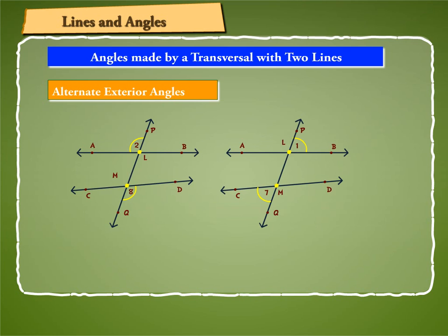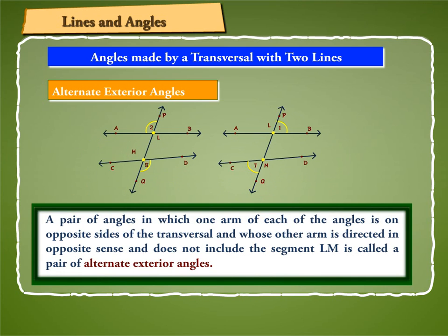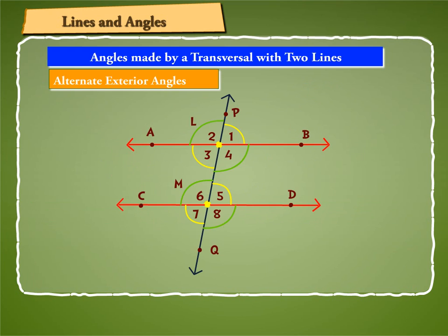On the other hand, a pair of angles in which one arm of each of the angles is on opposite sides of the transversal, and whose other arm is directed in opposite sense and does not include the segment LM, is called a pair of alternate exterior angles. In the on-screen figure, angle 2, angle 8 and angle 1, angle 7 form pairs of alternate exterior angles.